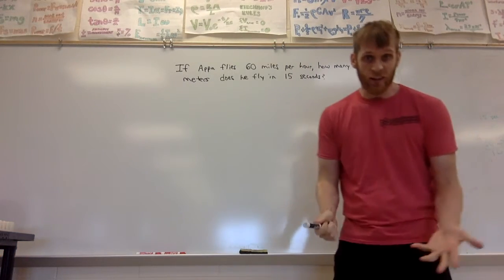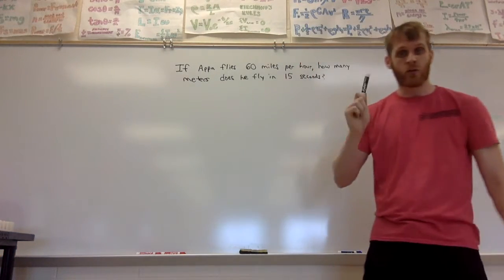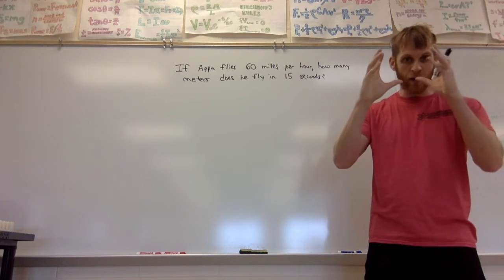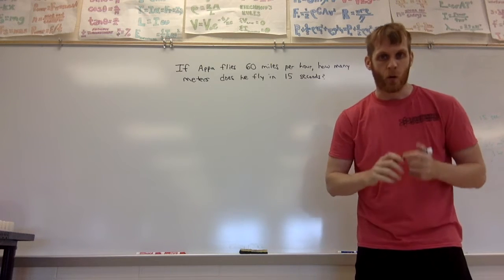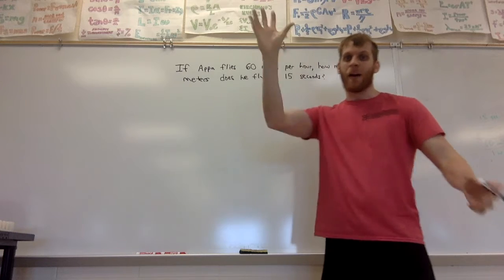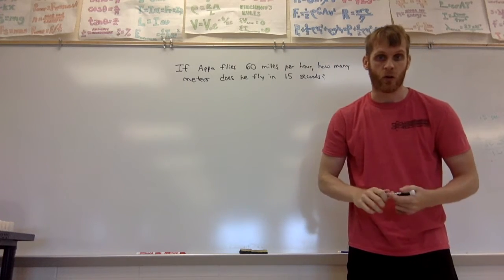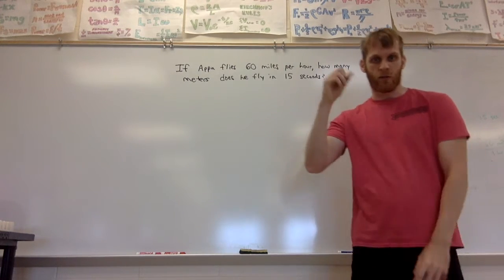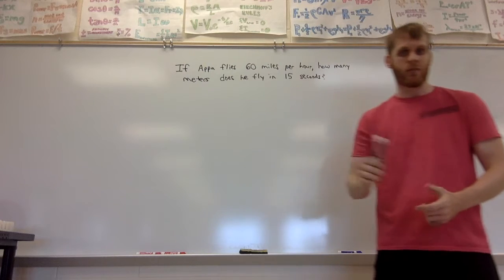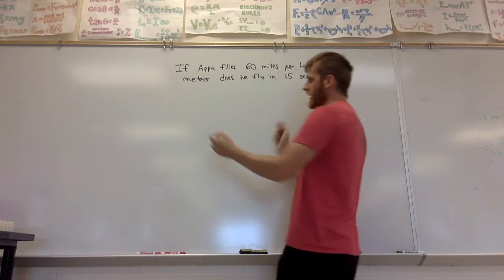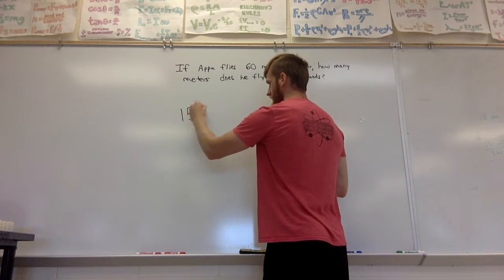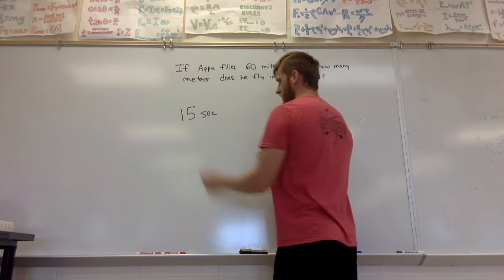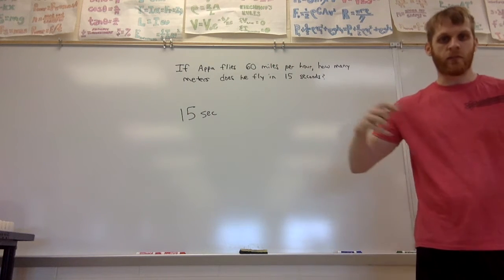Whenever you do a conversion like this, remember to always start with what you know. I like to start with one unit that I know. If there's miles per hour, that's actually two units connected together. Start with the one piece of information you know, which is 15 seconds. So 15 seconds is our starting point. We know he's jumping for 15 seconds.